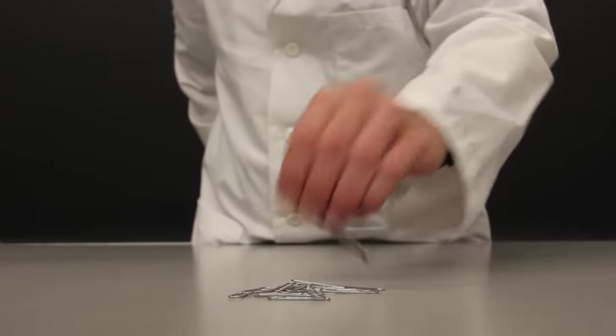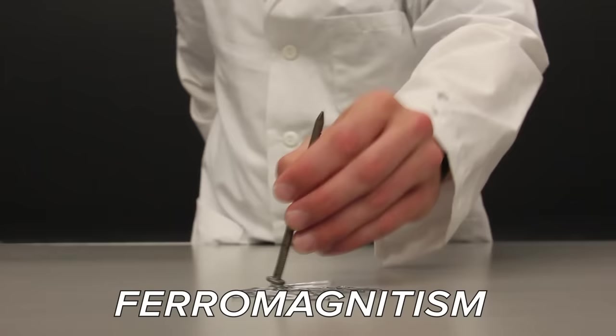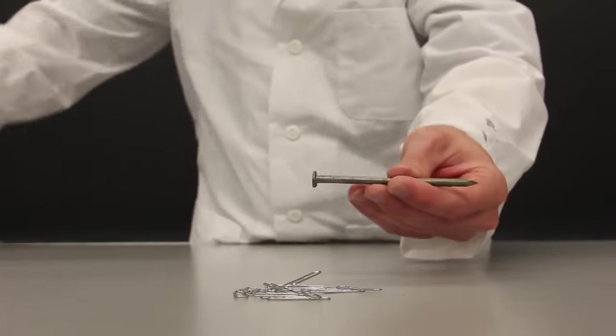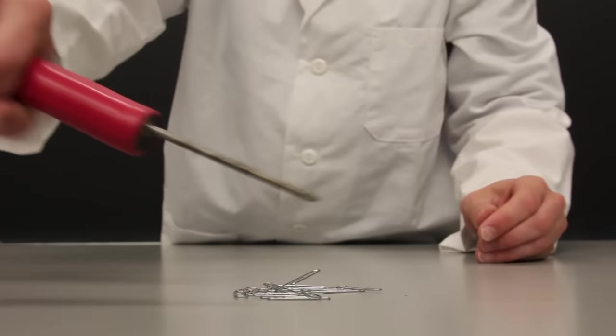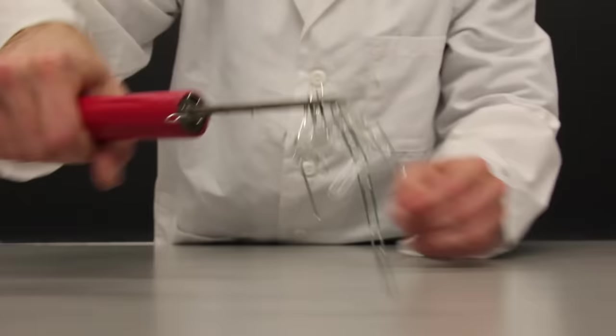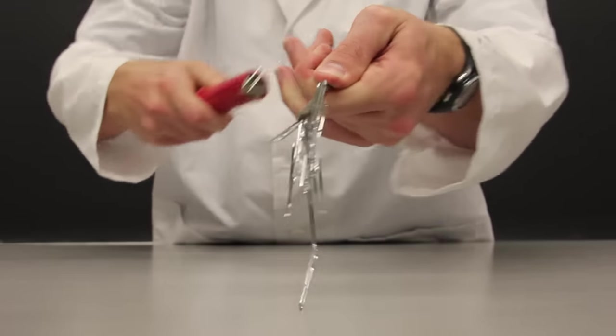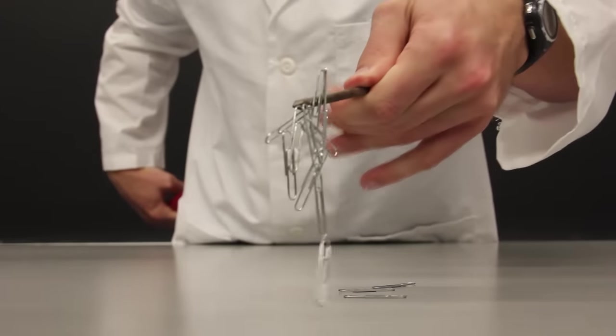You're probably already familiar with ferromagnetism. Ferro means iron. An unmagnetized piece of iron or nickel or cobalt becomes a magnet in the presence of a magnetic field. The effect is strong and lasts even after the magnet is removed.